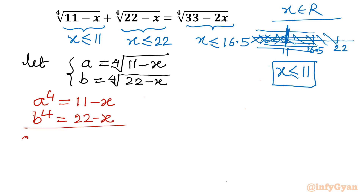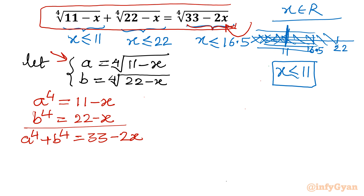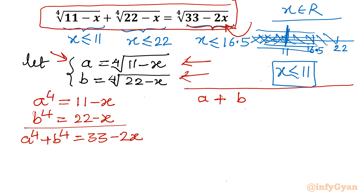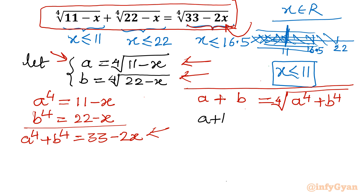Adding both equations: a⁴ plus b⁴ equals 33 minus 2x. Applying these substitutions to the original equation, it becomes a plus b equals the 4th root of (a⁴ plus b⁴). Now I will raise both sides to the 4th power: (a plus b)⁴ equals a⁴ plus b⁴. Expansion is required.